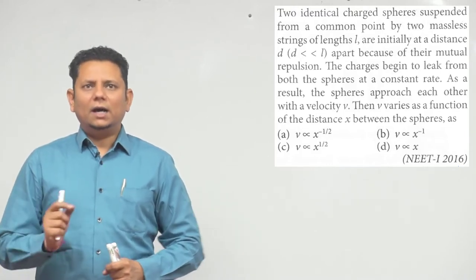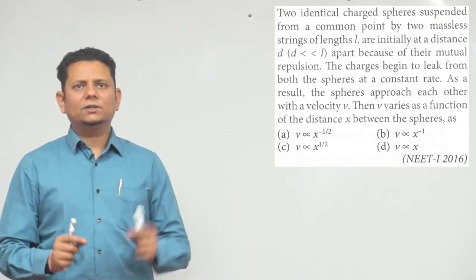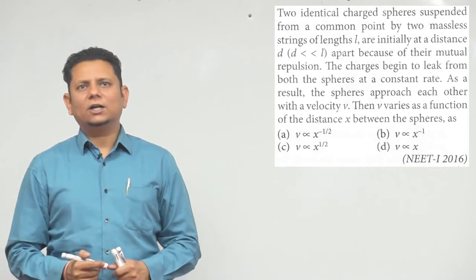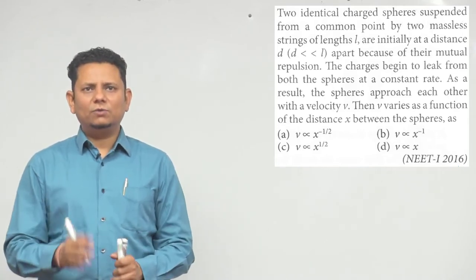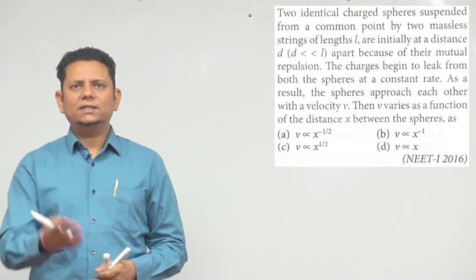We have to know that v varies with the function of the distance x between the two spheres. And we have 4 options: that v is proportional to 1 by under root x, v is proportional to 1 by x, v is proportional to under root x, v is proportional to x.